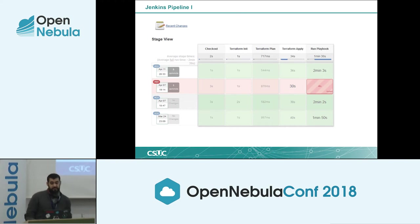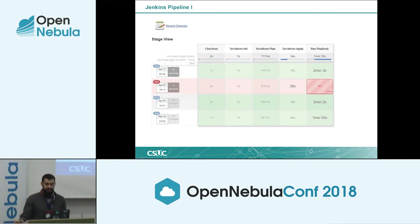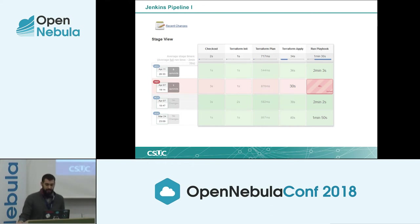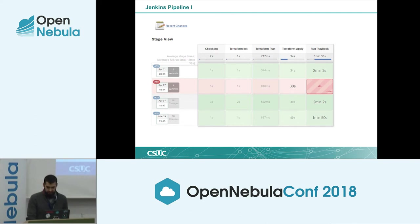Jenkins automates the Terraform workflow instead of running stage by stage by hand, letting Jenkins do the work for us. Jenkins checks out the code from GitHub, runs Terraform init, plan, and apply. Once Terraform finishes, it retrieves the VM attributes and then runs an Ansible job via AWX to make configurations or installations on the new instance.